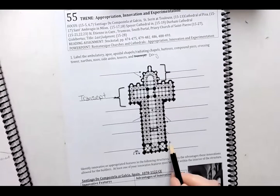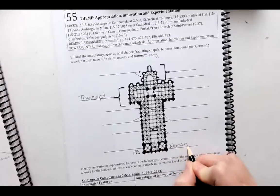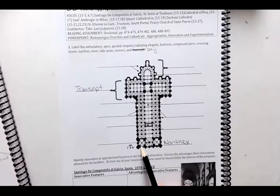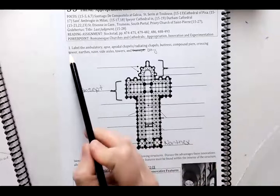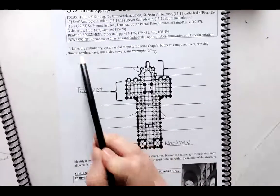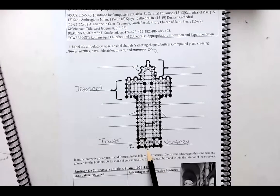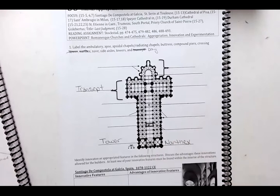At the very end, we have our narthex — the entranceway into the church. Notice that on either side, there are towers, which would make the entrance of the church obvious. You'd know that was the side you would enter, and there would be two doorways to go into the interior of the church.